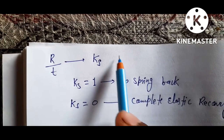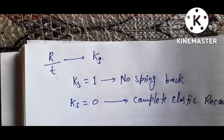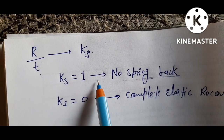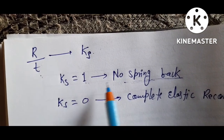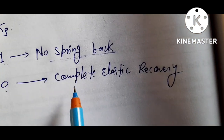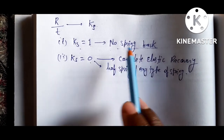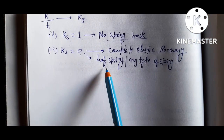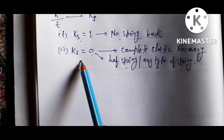Friends, the spring back factor Ks depends only on the r/t ratio. If Ks equals 1, there is no spring back. If Ks equals 0, there is complete spring back — that means complete elastic recovery. This complete spring back situation happens in leaf springs or any type of spring where Ks equals 0.